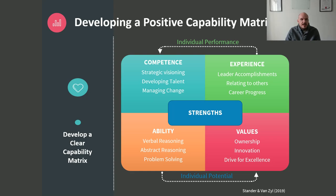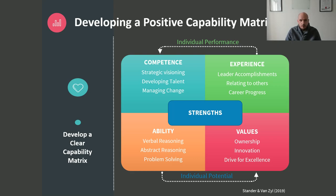We look at leaders' accomplishments, how they relate to others, and how fast their career progress is — these give us an indication of how likely they are to perform. On the potential side, we look at a person's actual ability. Learning potential is a function of verbal reasoning, abstract reasoning, and problem solving — traditional intelligence components. Finally, we assess values — specifically the company's values. The higher the alignment between the person and the company's values, the more likely they are to fit in and perform. All of this is always strengths-focused. We don't want to fix things that are wrong — we want to optimize.